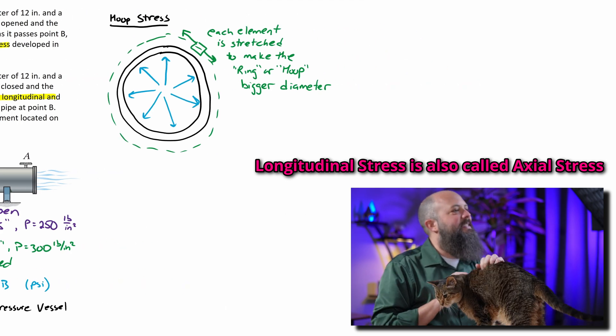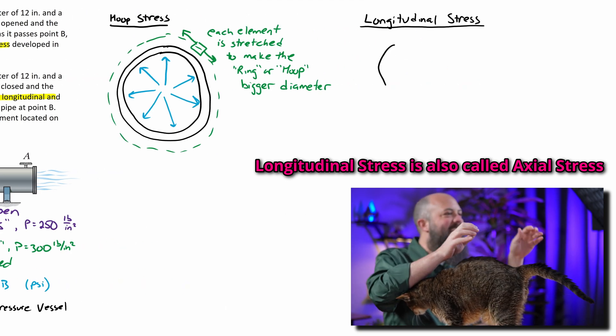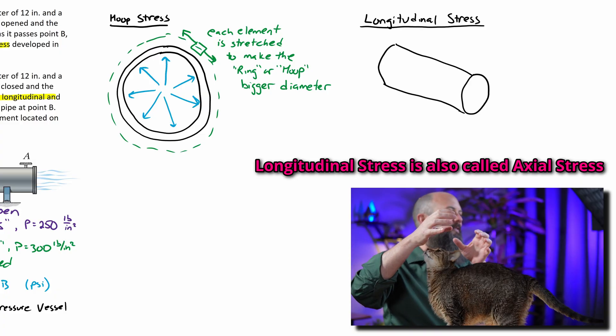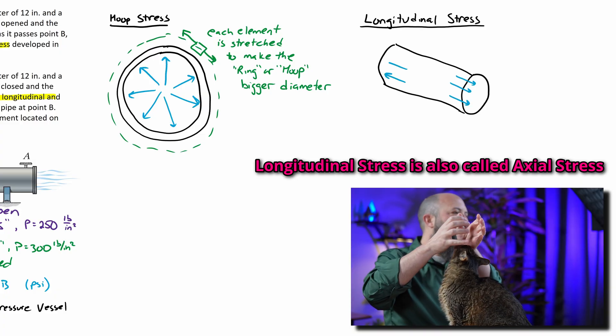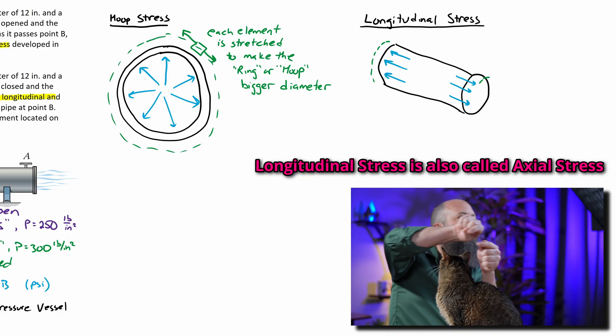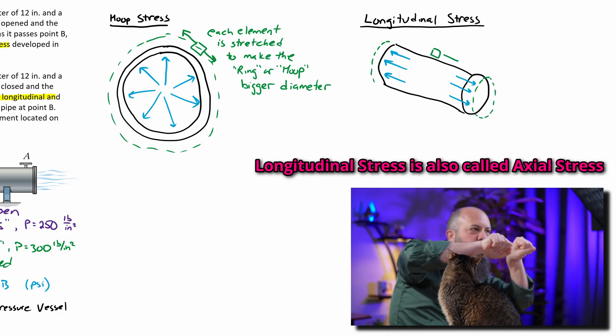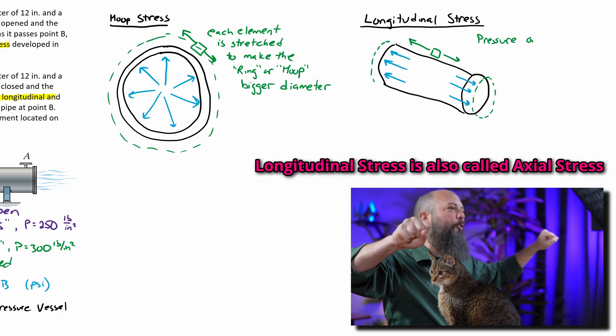Longitudinal stress is when your cylindrical pipe is getting lengthened. Because if there's a valve on one end that's shut, all the water is pushing against it and trying to stretch the pipe outwards in a longitudinal direction. The length of the pipe is getting longer.